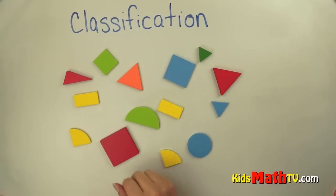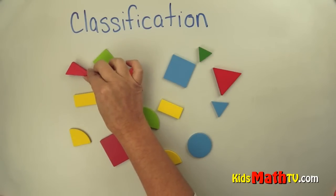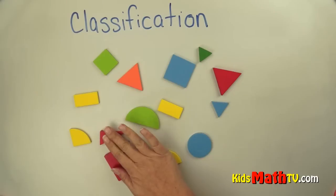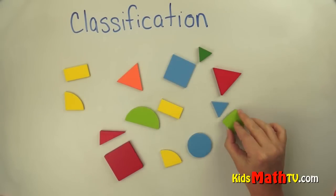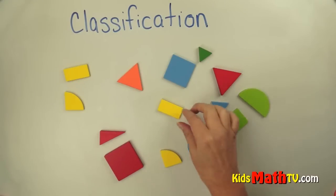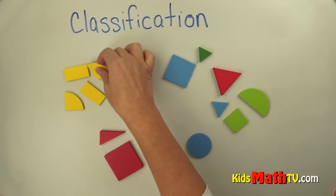Let's put all the same colors together. I see red here and there's red. Let's put the yellows together. Green over here. This one's yellow, it goes over here. I see another yellow, I'm going to put that with yellow.